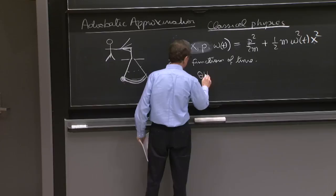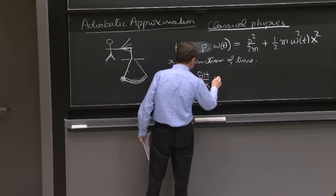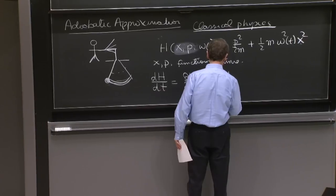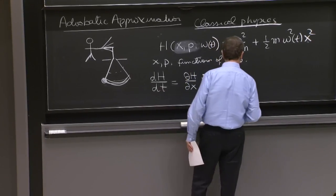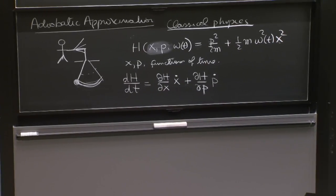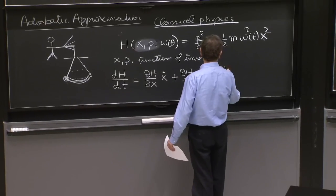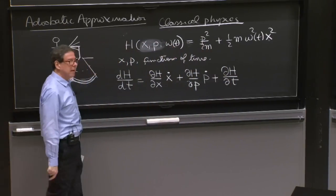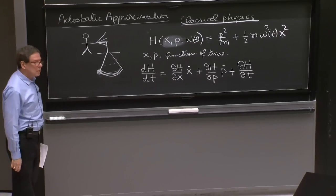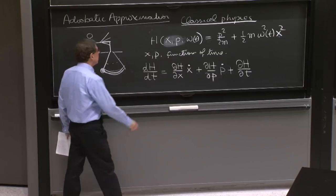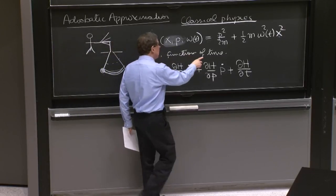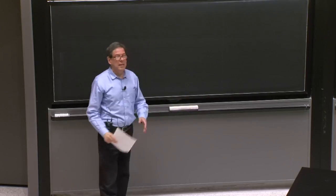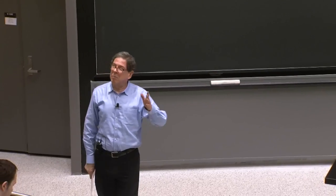So what should we do? We should do dH/dx times the rate of change of x, because h depends on x, dH/dp times the change in time of p. We use dots for time derivatives. And then, finally, we also have to differentiate h with respect to time to take into account the variation of omega, which is a parameter here. So all these things must be done. And let's assume these are functions of time, because the system is doing physical motion. So we're trying to investigate how the energy changes if the system is doing physical motion.